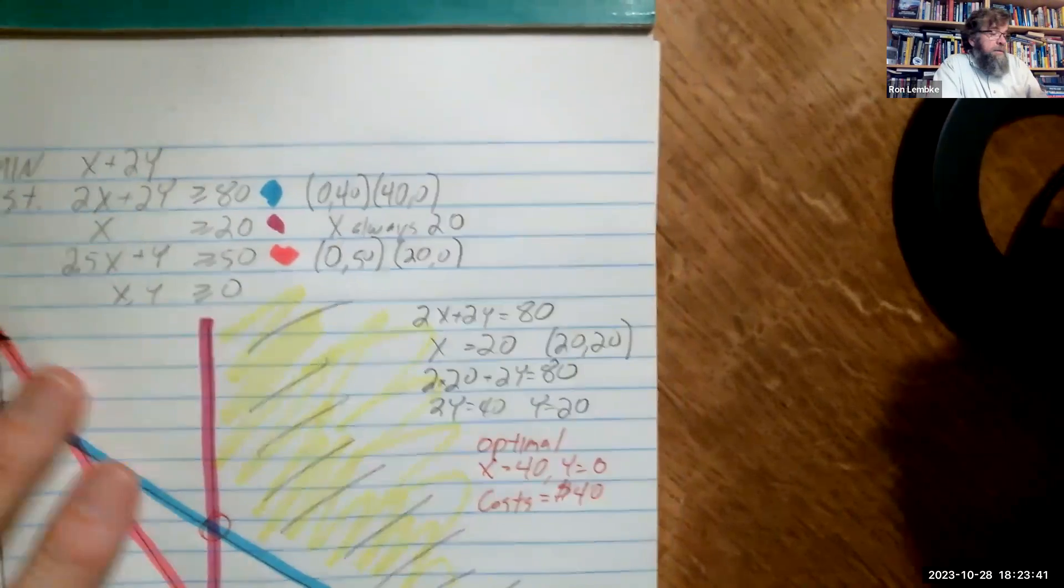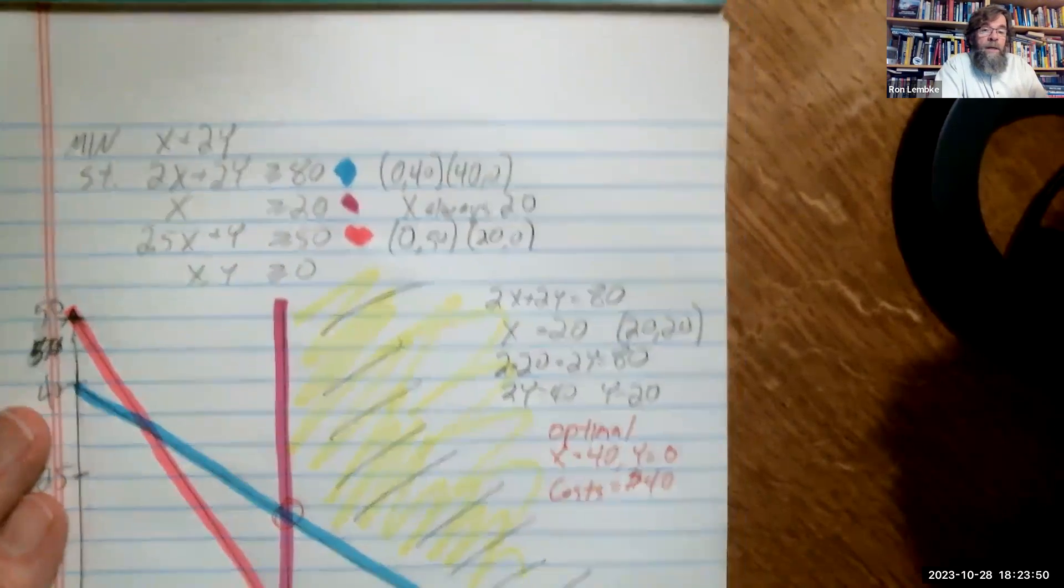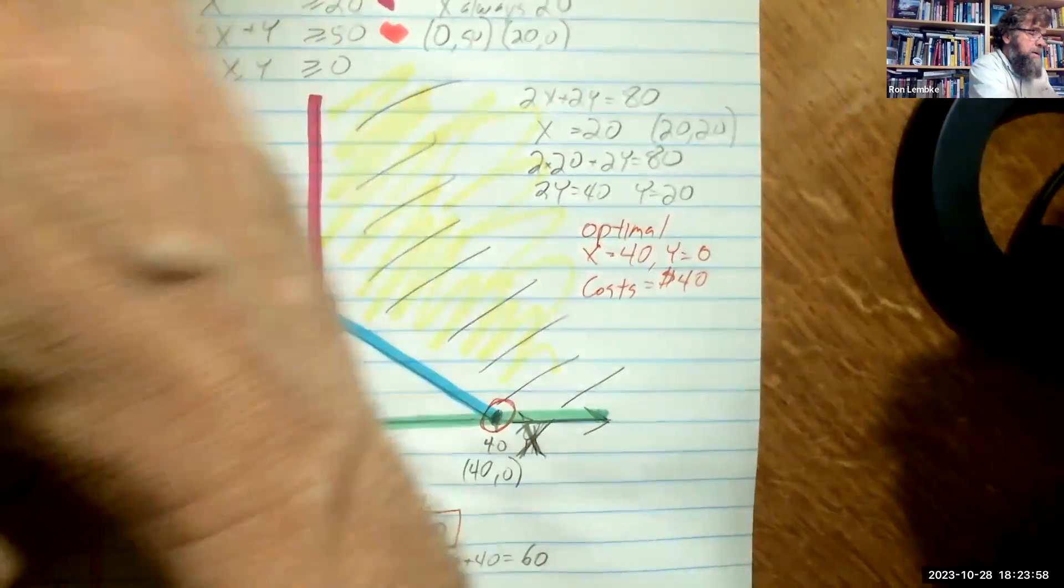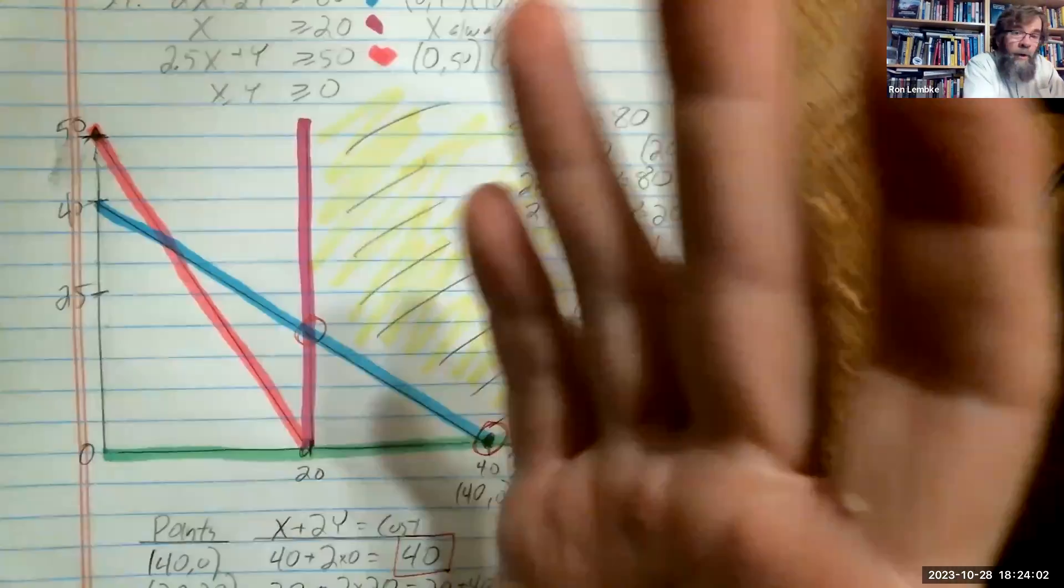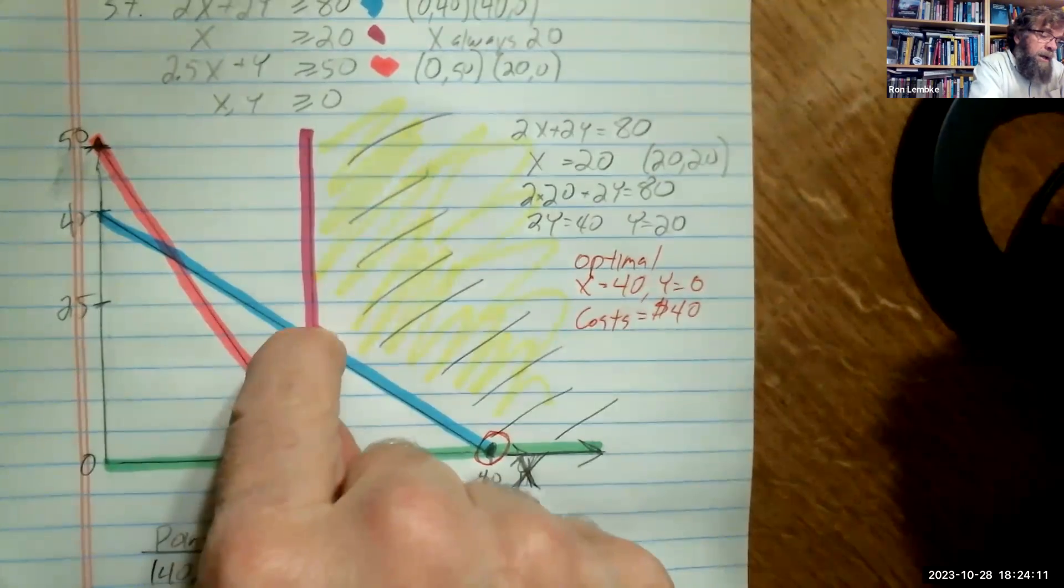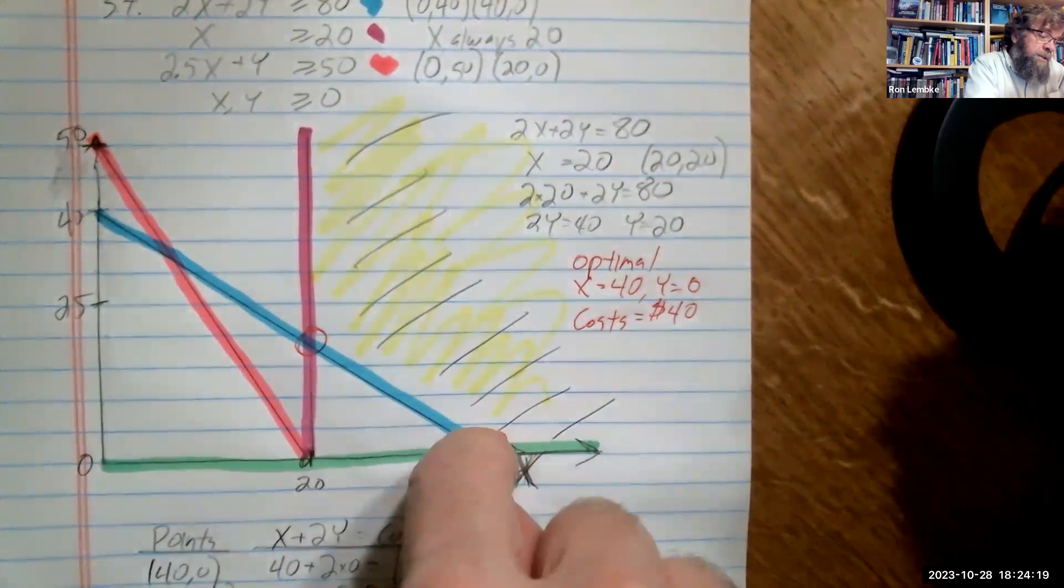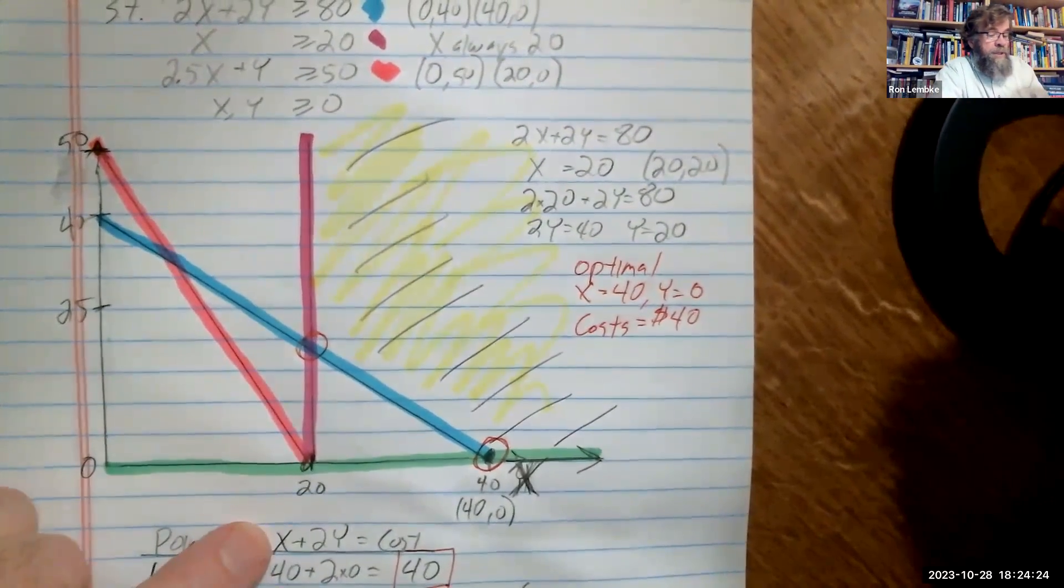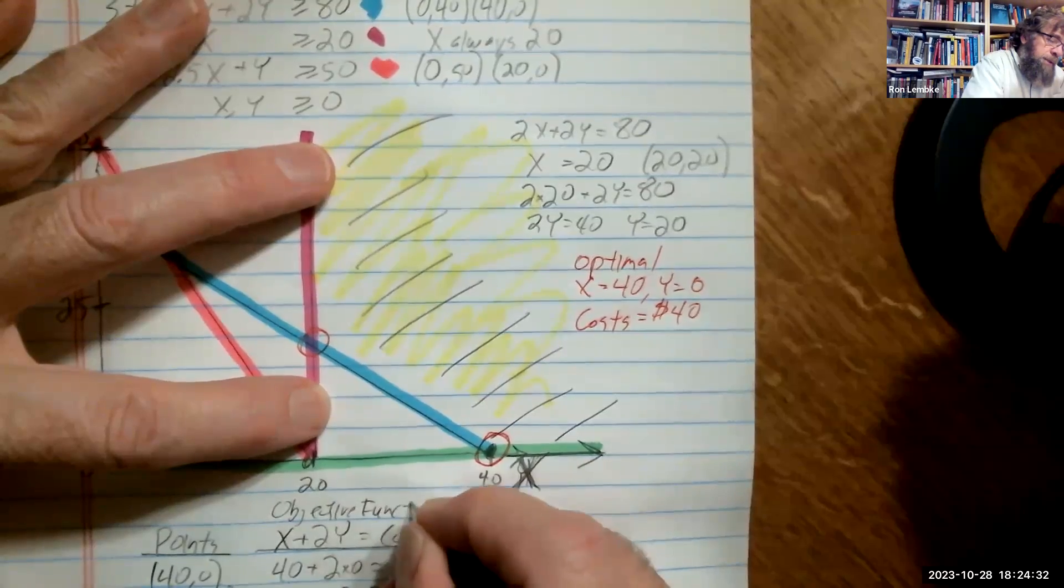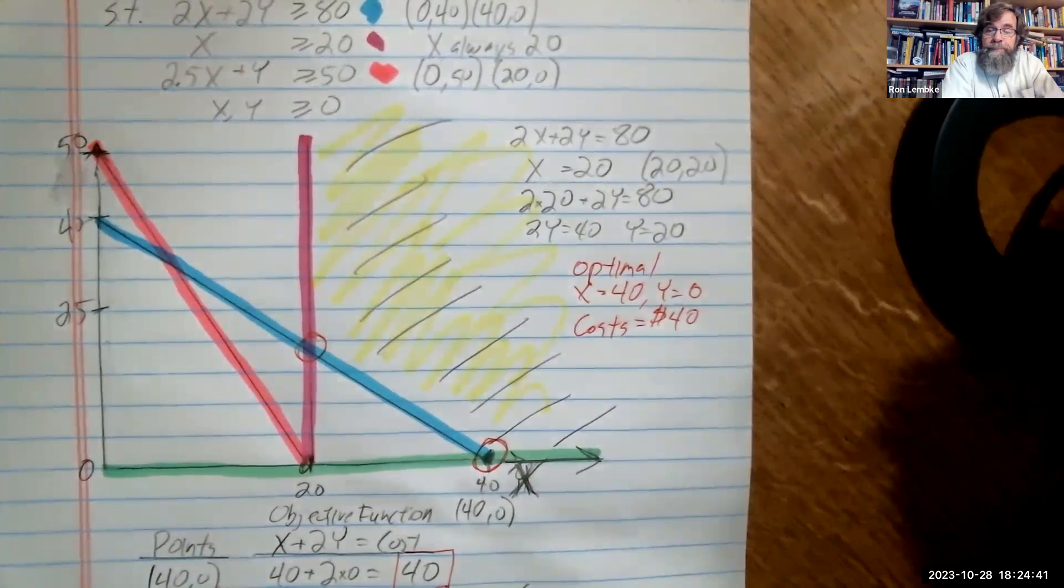So to recap, we have our linear program, and we found endpoints of each of the constraints. And once we've found the endpoints, then we graph them all here on our x and y axis. And we color coded them just to keep them all straight. You don't really have to do that, but I think it's helpful for you when you're watching. And we found the feasible region, and we found the intersections, the corner points of the feasible region. And then we solved mathematically to find the locations of these points. And then we evaluated our objective function at those two points. And because we are minimizing, we chose the point that has the lowest total cost. So I hope this has been helpful.